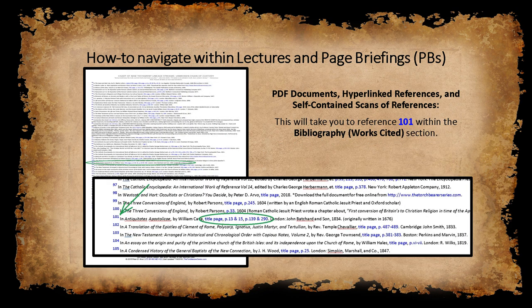After clicking, it will take you to reference number 101 within the Bibliography Works Cited section. Clicking on the blue 101 reference number here, indicated by the green arrow on the image, will take you back to the top of the document where you left off. But instead, let's suppose we want to see the actual pages being cited. Normally, this would be a very time-consuming process to track down the resource.